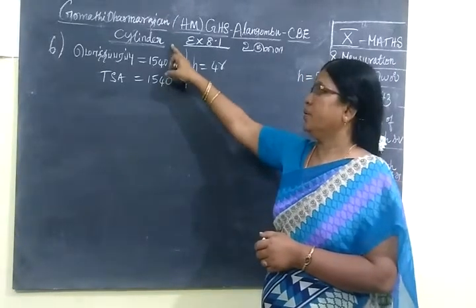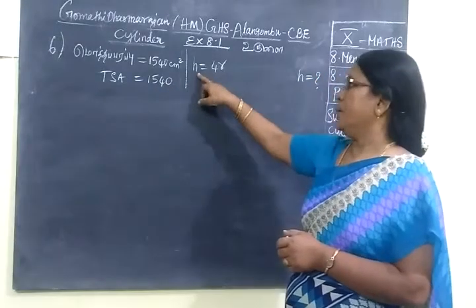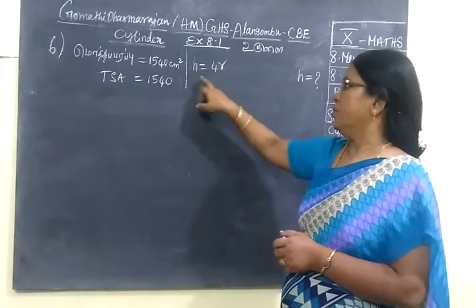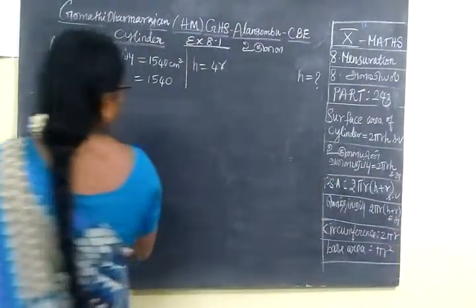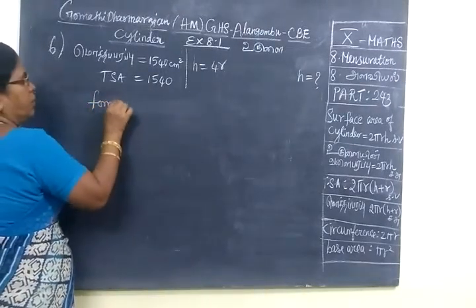TSA = 1540. And the diameter is given as 4R, 4 times the radius. So diameter = 4R. You have to find H. So we use the formula.